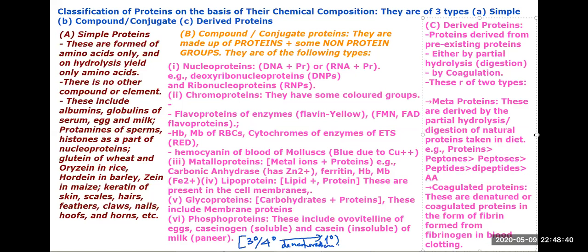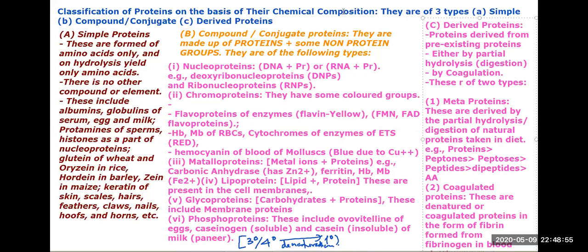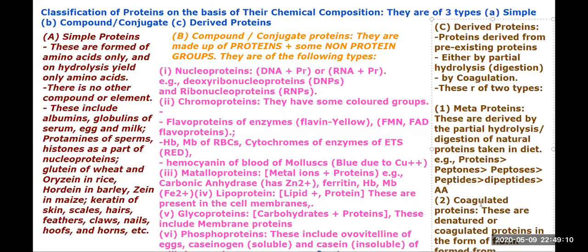The second type are coagulated proteins — these are denatured or coagulated proteins. An example is fibrin, formed from fibrinogen of blood. Fibrinogen to fibrin is coagulation.